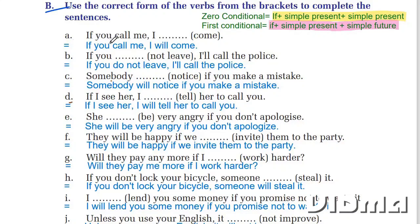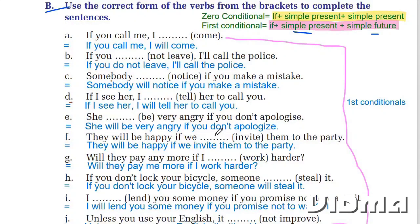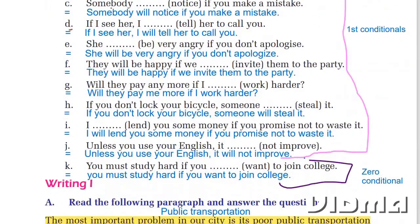Question B: Use the correct form of the verbs from the brackets to complete the sentences. Question A: 'If you call me, I will come' — answer is 'will come', first conditional. All sentences except the last one are first conditional, and the last one is zero conditional. Question B answer: 'If you don't leave, I will call.' Question C: 'Somebody will notice if you make a mistake.' Question D: 'If I see her, I will ask her to call you.'